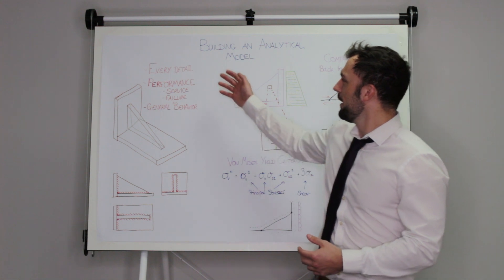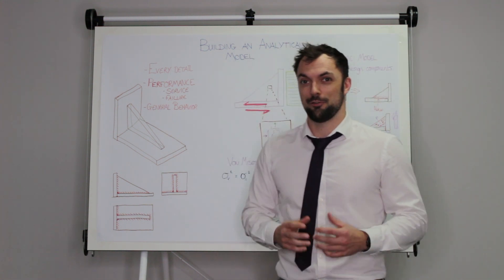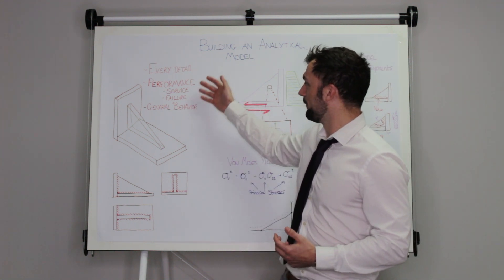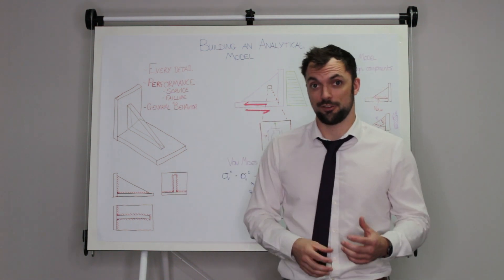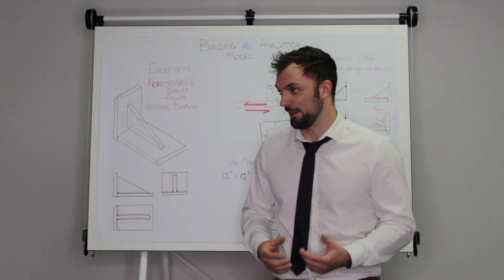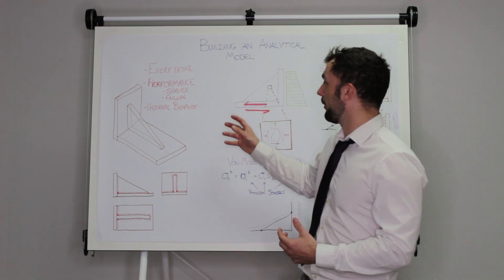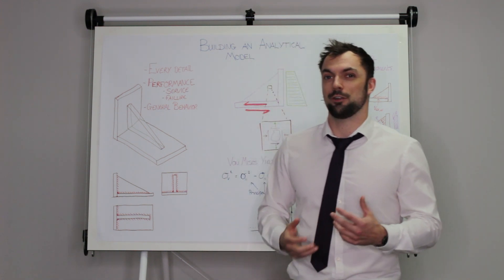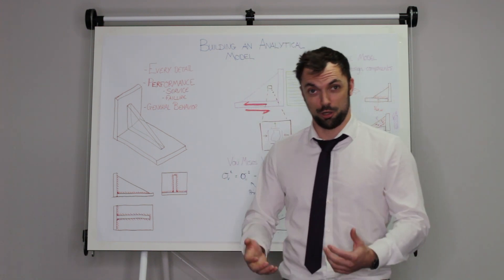So some golden rules: we don't have to work out every single detail of an object for the analytical model. All we have to do is make sure we assess the performance sometimes at service and sometimes the performance during failure. That's the really important one because we want to know what its general behavior is going to be as it approaches failure and what kind of loads we can expect that will cause a failure.